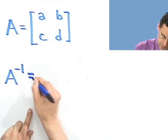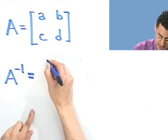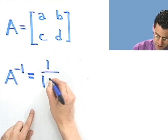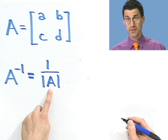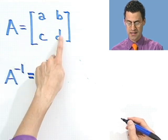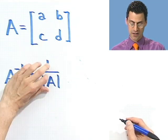Well, it starts off with a scalar. We take 1 over the determinant of A. So you have to compute the determinant of A. That's just that number AD minus BC. That's a number, and you take its reciprocal.